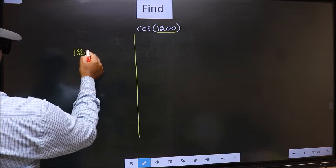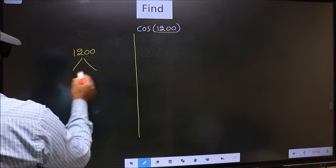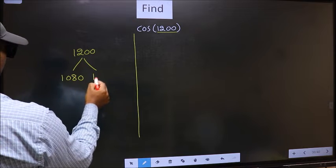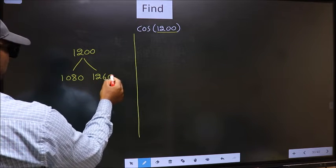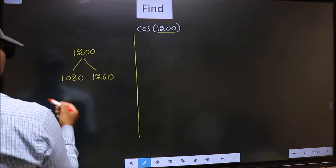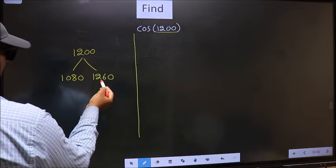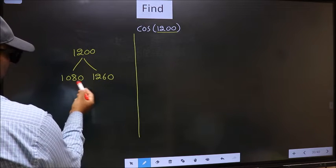1200 lies between 1080 and 1260. This is 180 into 6, and this is 180 into 7. Between these two numbers, 1200 lies.